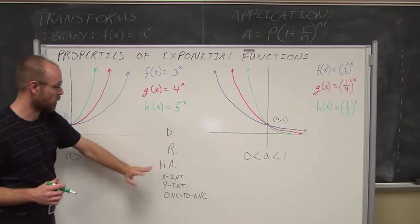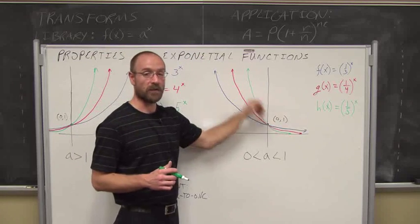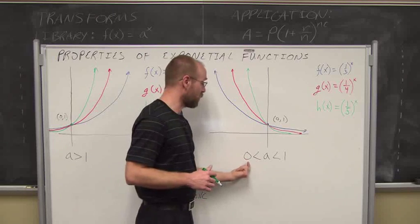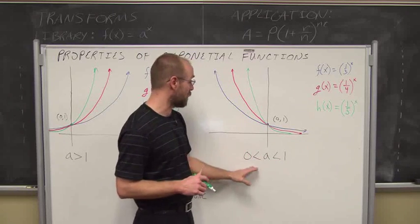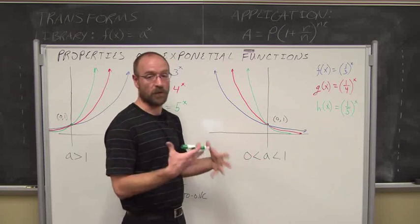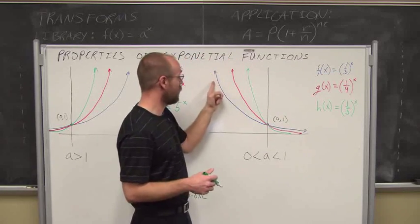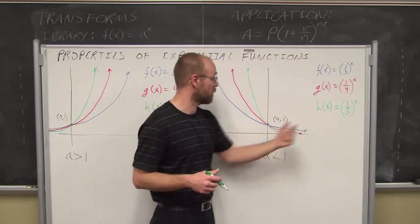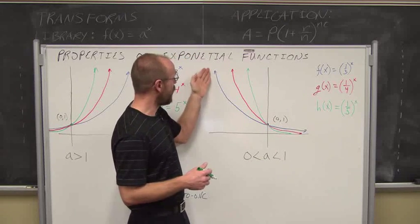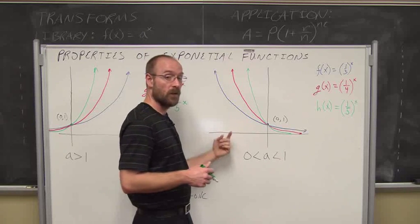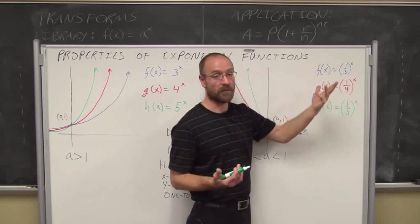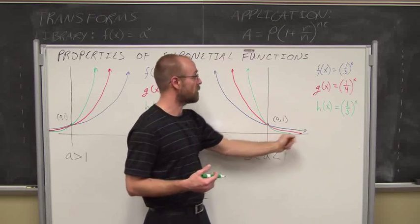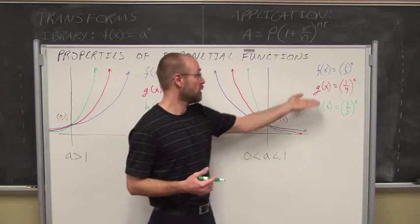Now let's look at exponential decay, where the function is decreasing. Previously our base was greater than 1. If our base is between 0 and 1 — a fraction or decimal — we get decay. An example is (1/3) to the x, which is the blue line. It decreases by a factor of 1/3 each time x gets larger. For negative x values, it's higher because a negative exponent is a reciprocal — for example, (1/3) to the negative 2nd is positive 9. The red line (base 1/4) decreases even faster, and 1/5 faster still.